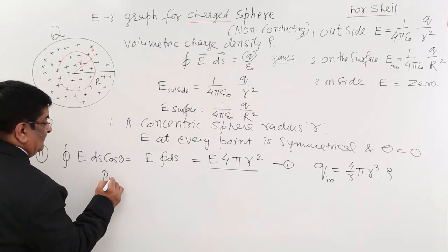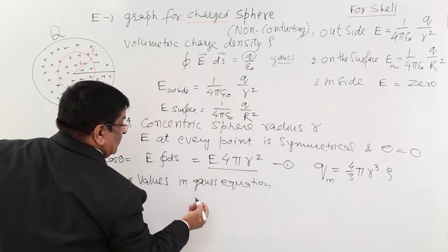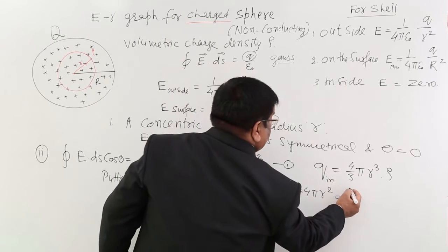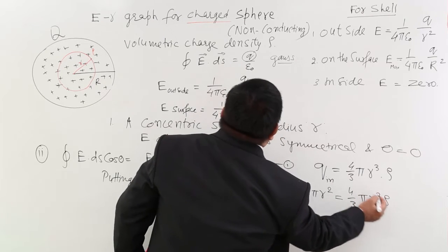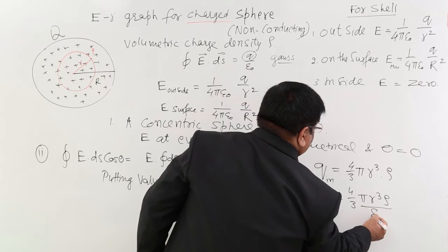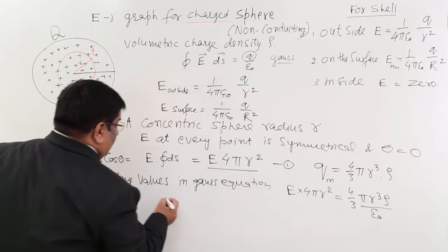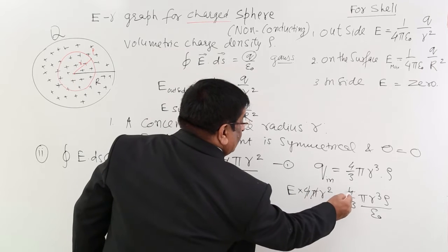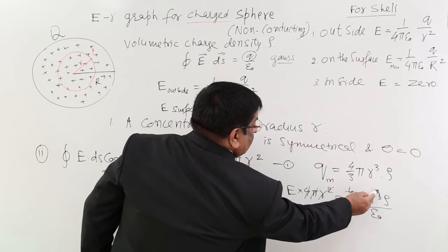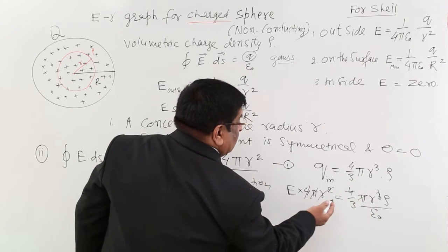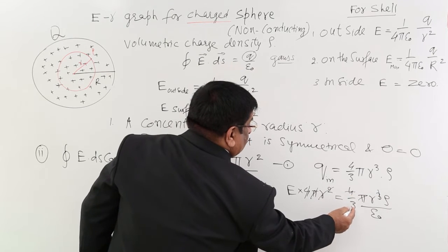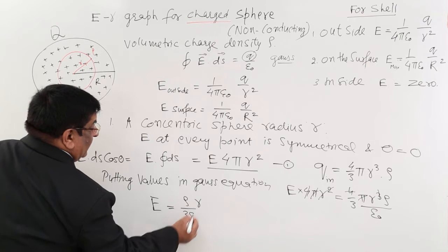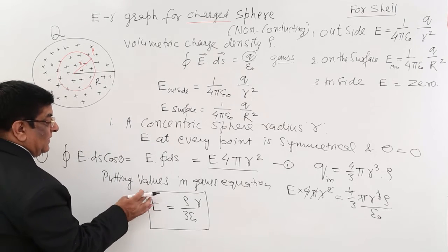Now putting values. Closed integral E ds had come equal to E into 4 pi r square is equal to q. q is equal to 4 upon 3 pi r cube into rho upon epsilon naught. Now exclude E. So E is equal to 4 pi r square, so this is 3. E is equal to r into rho upon 3 epsilon naught. Rho upon 3 epsilon naught into r. This is electric field inside it.